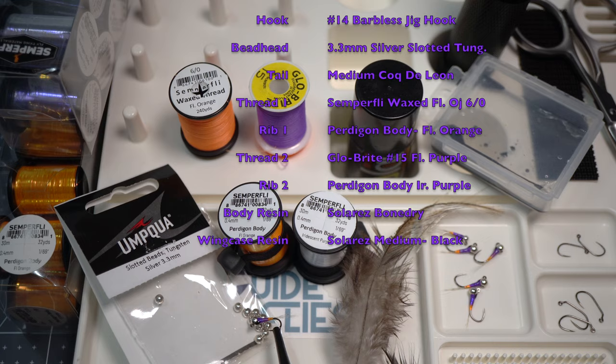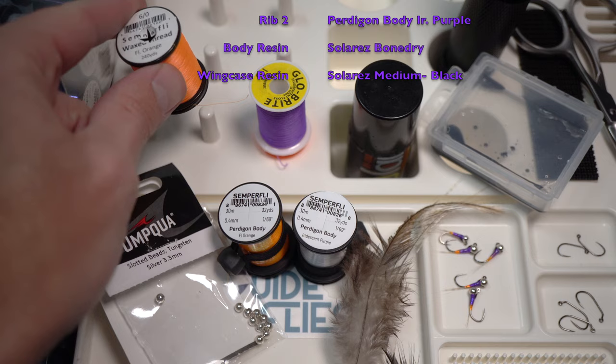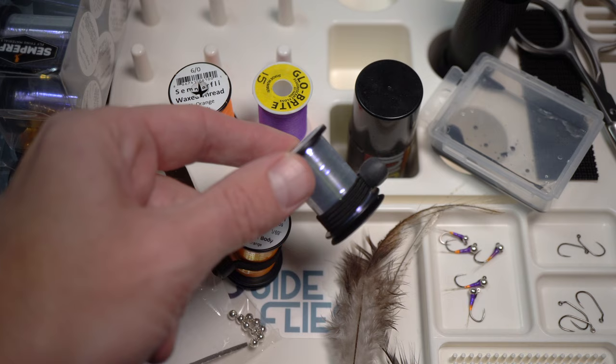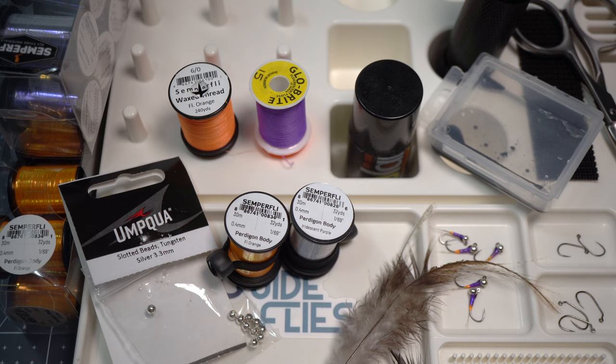For the hook I'm starting out with a heavy barbless number 14 style jig hook, a 3.3 millimeter silver slotted tungsten bead head. The rear hot spot thread is going to be a Wax 6.0 fluorescent orange from Semperfly. That's getting that Perdigon body quill in fluorescent orange over it. Then the main body will be a Glowbrite number 15 fluorescent purple and that's getting topped with some iridescent purple Perdigon body quill.